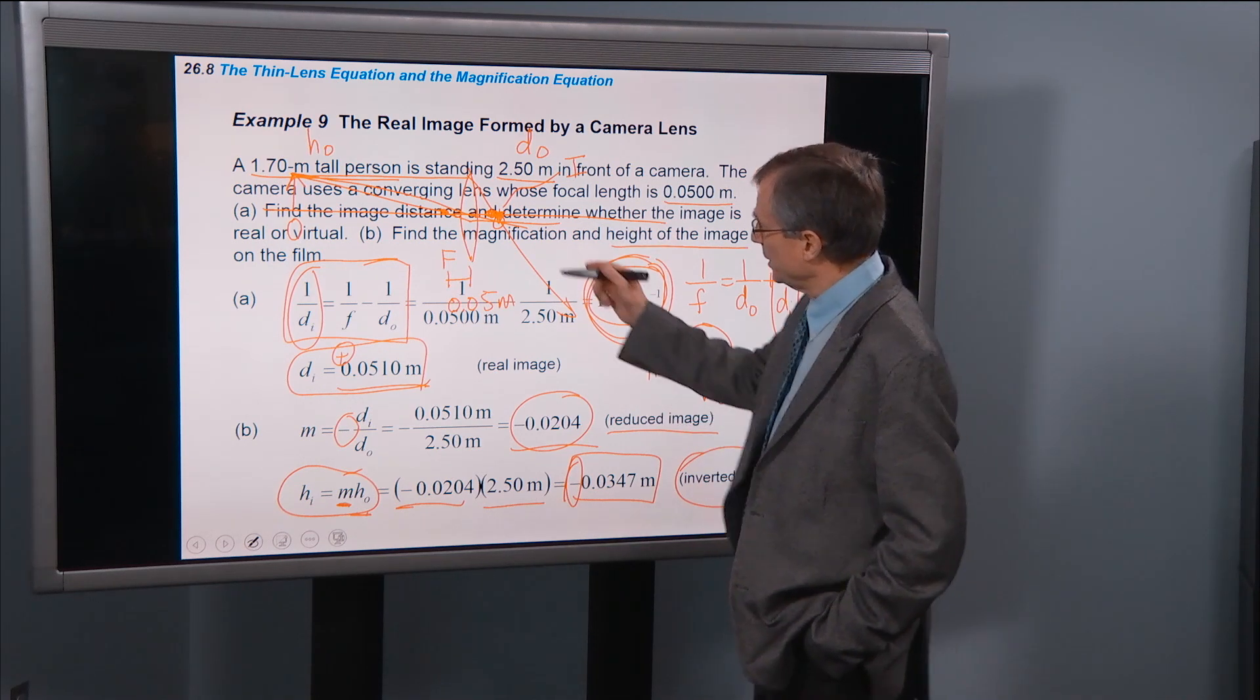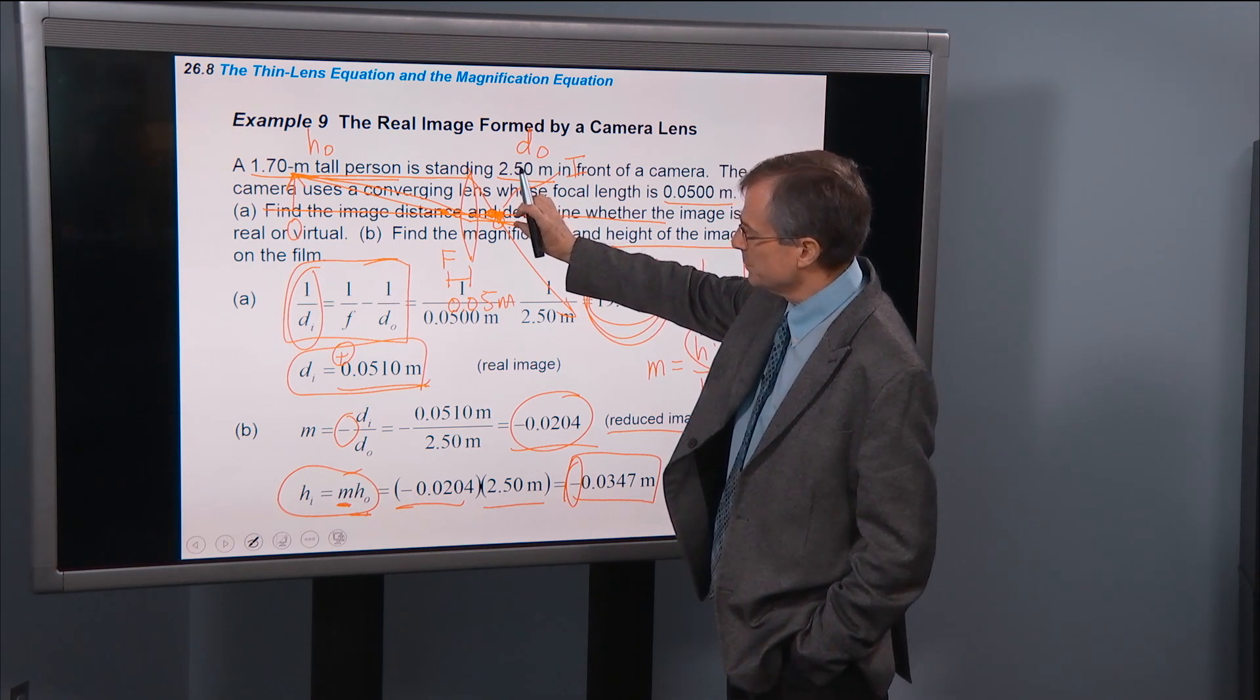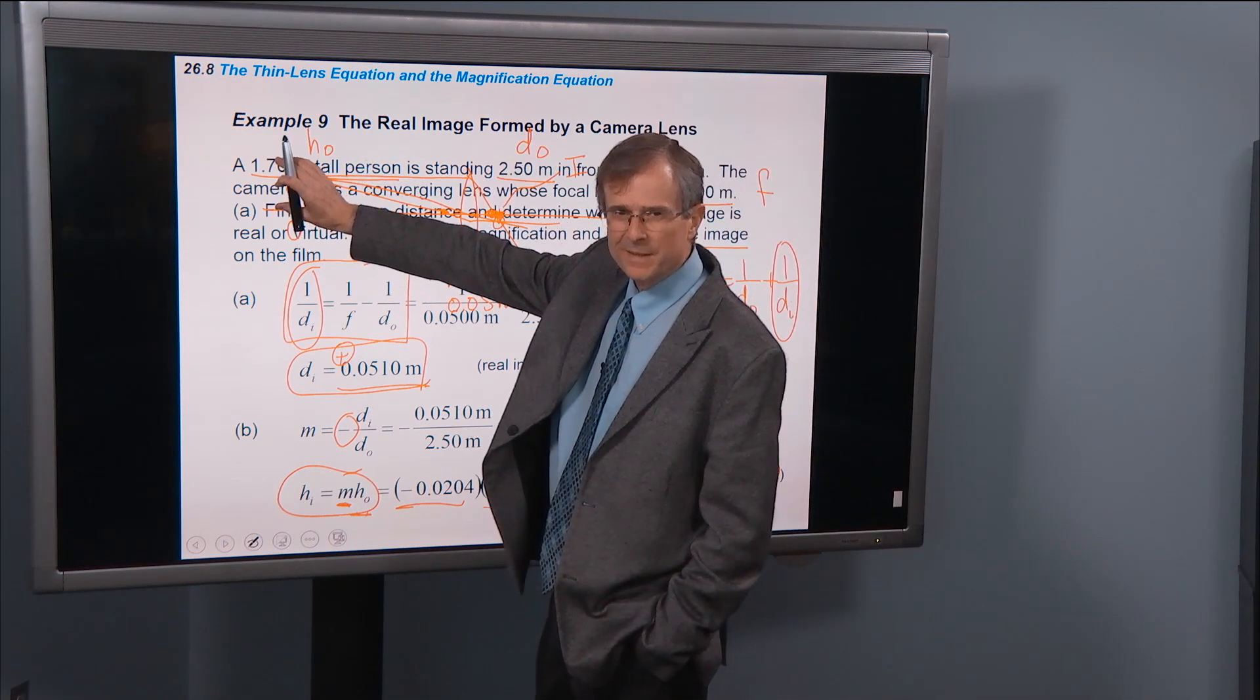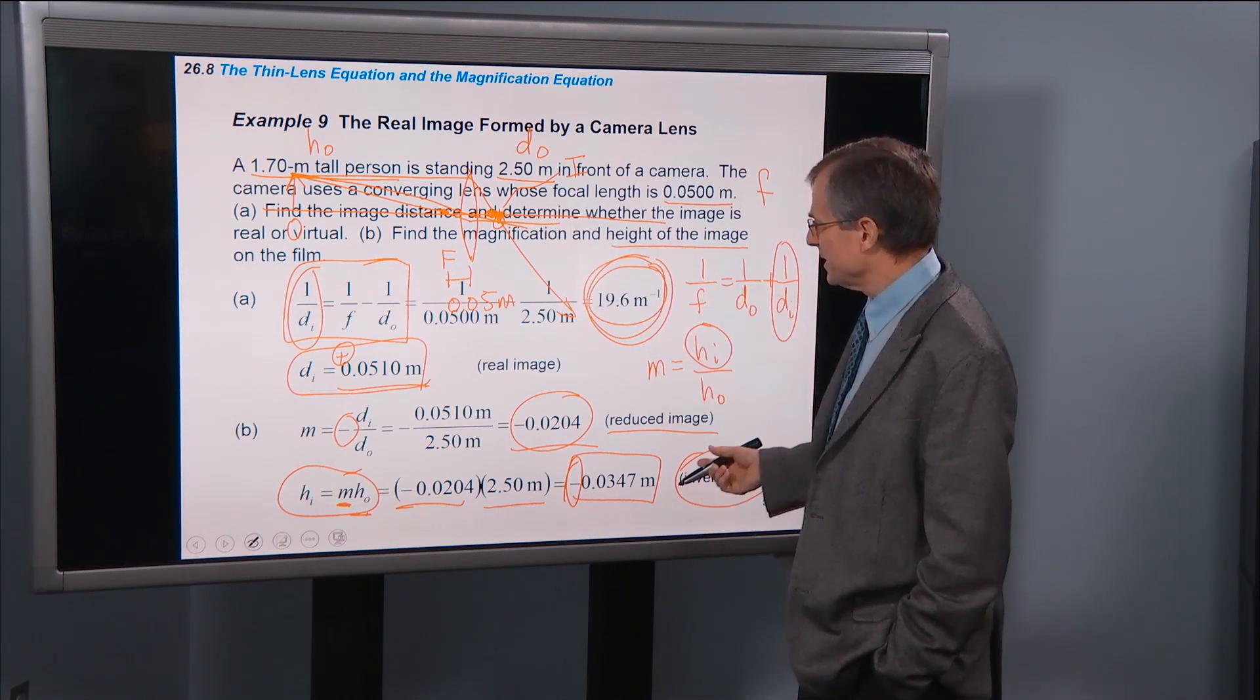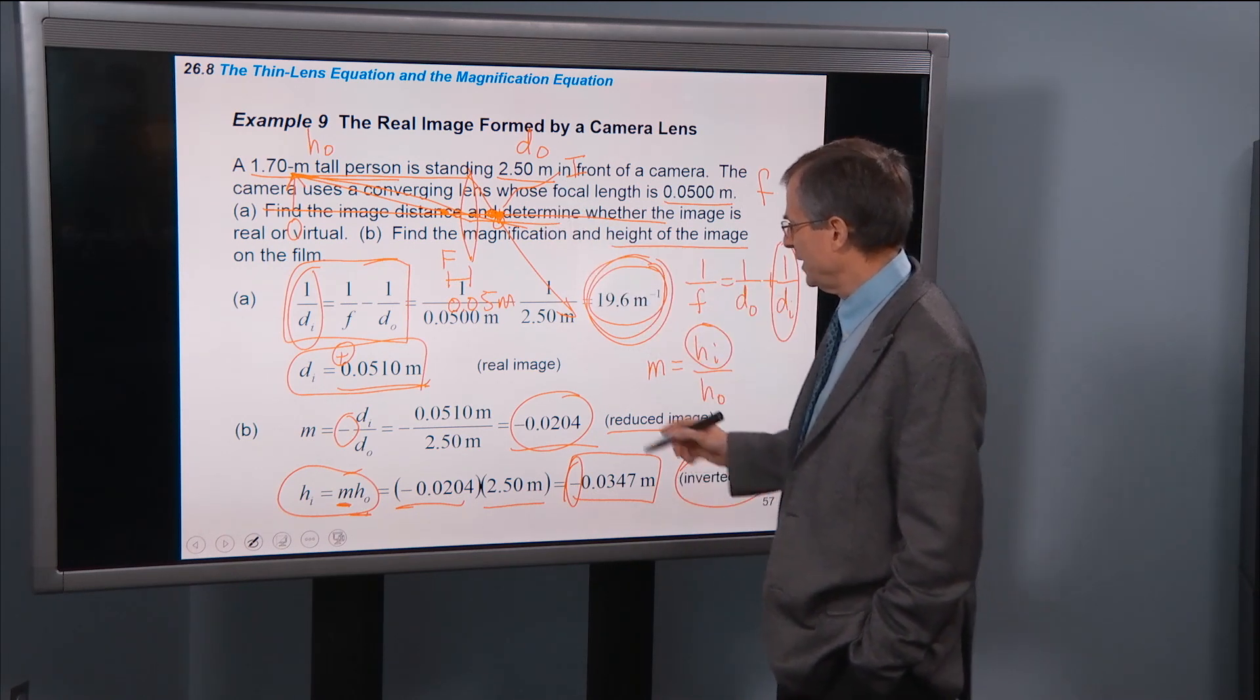It's going to be inverted because it's below the axis. And is the size of that image going to be small or large compared to the size of the object? And you say, well, pretty small looks like.